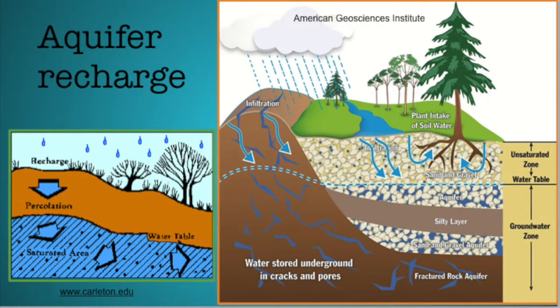Recharge in an aquifer occurs when water is added to it. Typically recharge is from rain and snowmelt. In a confined aquifer, the water enters from a location where part of the aquifer is unconfined. Geology, topography, pumping rate, and the number of wells all play a role in the recharge rate of an aquifer.